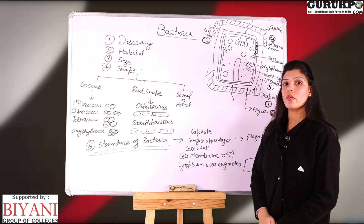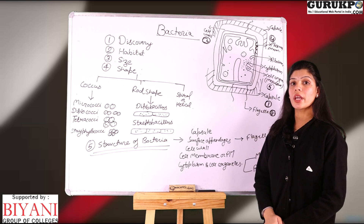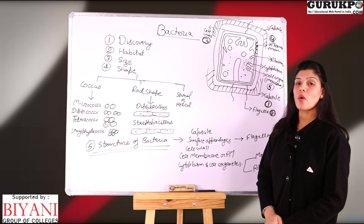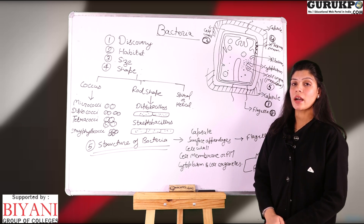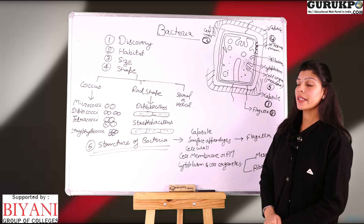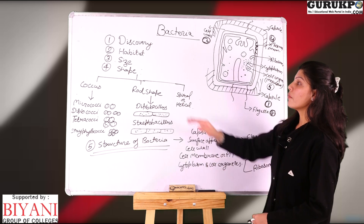Third category is the size. Bacterias are very small in size and cannot be seen without a microscope. The smallest bacteria is Eubacterium and the biggest bacteria is Beggiatoa.